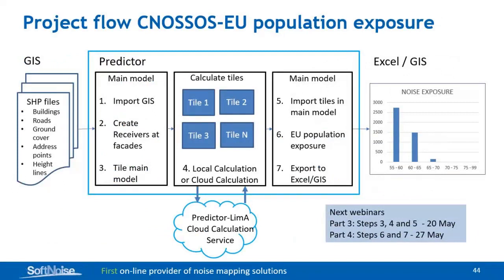All four parts have to do with this project flow. You start with importing your GIS data in order to create your main model. Within Predictor you then create receivers around the facades — we did that last week. Today I will show you how to tile the main model, then calculate the tiles and import the tiles back into the main model, especially the results. Then you have all the results of the complete agglomeration in one model. Next week I'll explain the EU population exposure, and then you export either to Excel or GIS for further processing and making your report.